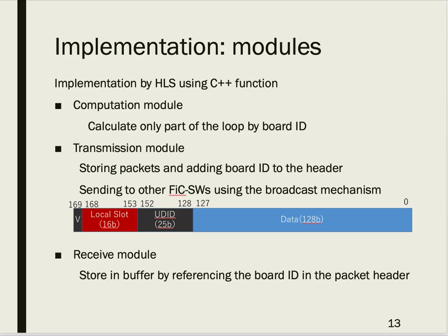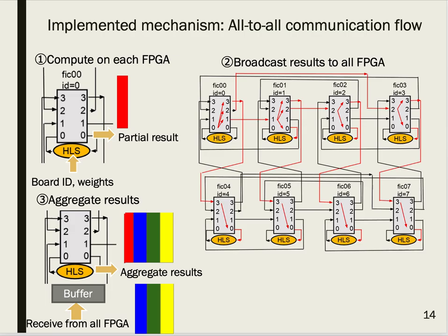Second, the transmission module stores data into packets and adds board ID to the header, then sends data to other FIC-SWs using the broadcast mechanism. Third, the receive module stores data to buffers by referencing the board ID in the packet header.